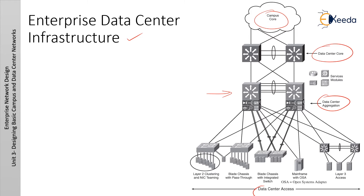IDS is the intrusion detection system. It must support server farm services such as content switching, caching, and Secure Socket Layer (SSL) offloading, while integrating with multi-layer server farms, mainframes, and mainframe services such as TN3270. Load balancing and SSL offloading network devices are often deployed in redundant pairs to avoid a single point of failure.